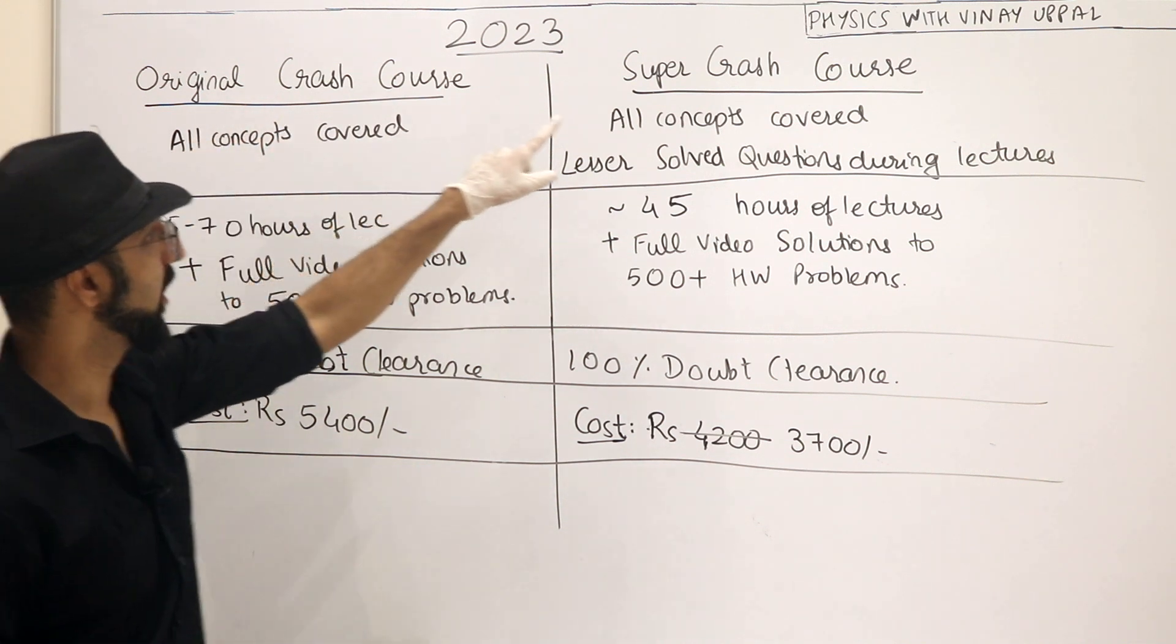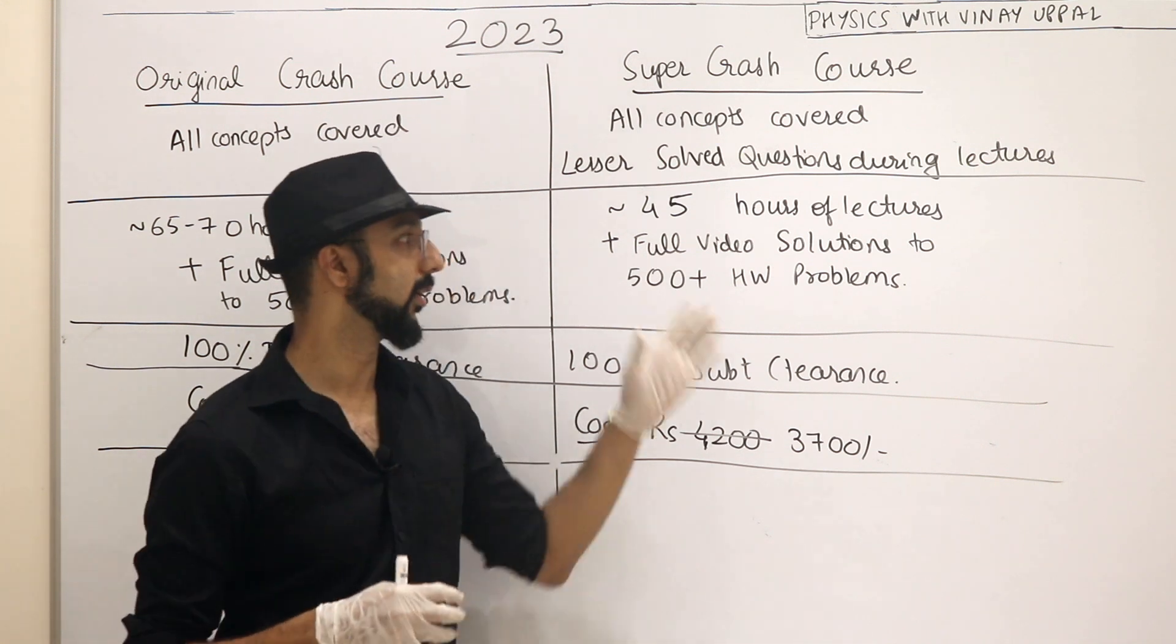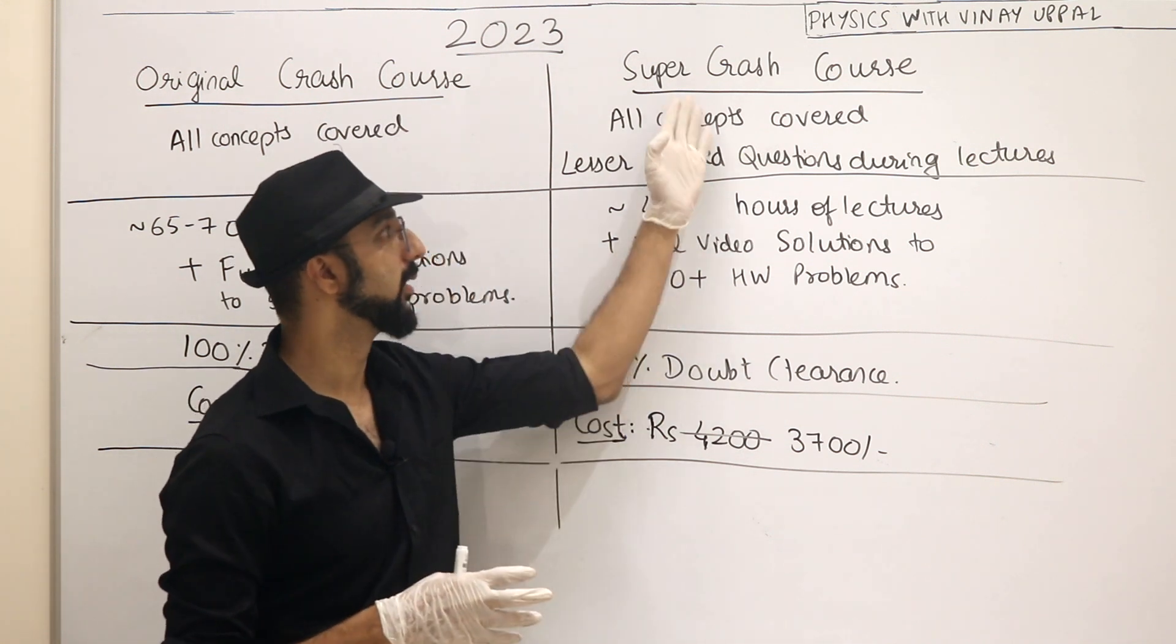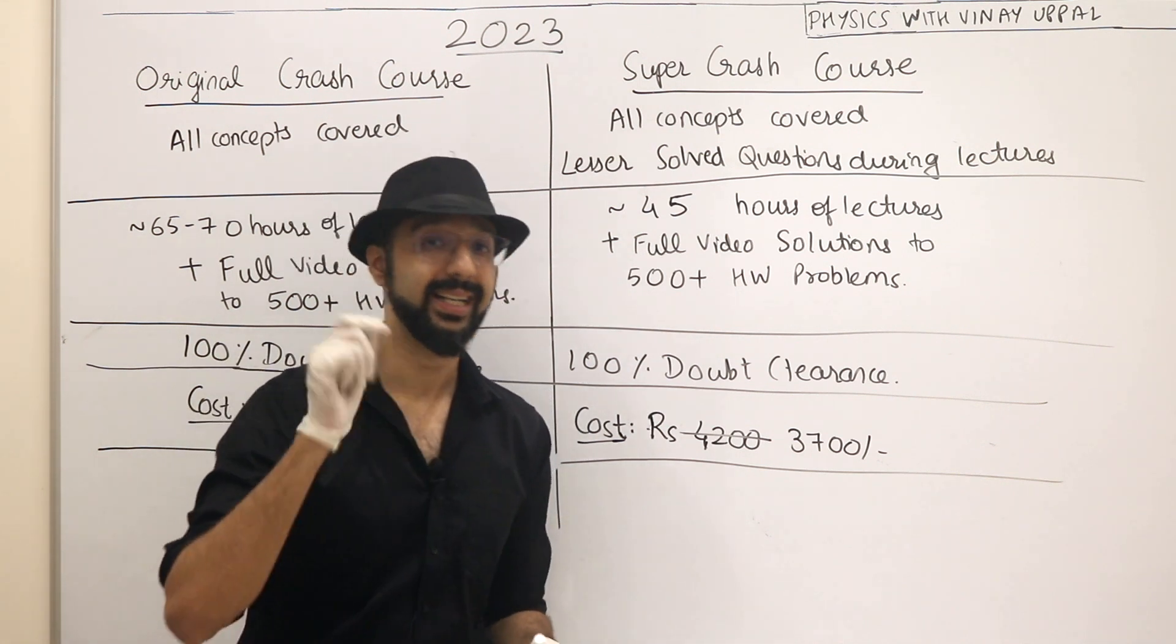Original crash course was around 70 hours of lectures. I have condensed it to around 45 hours of lectures. So that is why, if you have time constraints, then this is the course for you, where you can quickly cover, brush up all the concepts for JEE Advanced in detail as well.